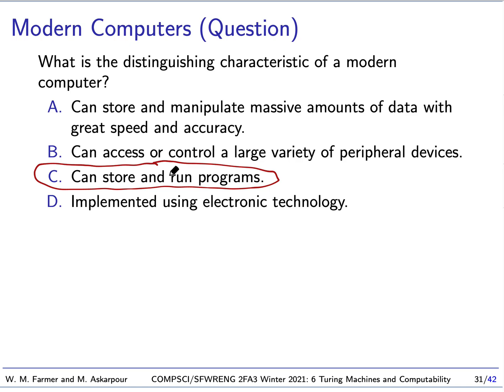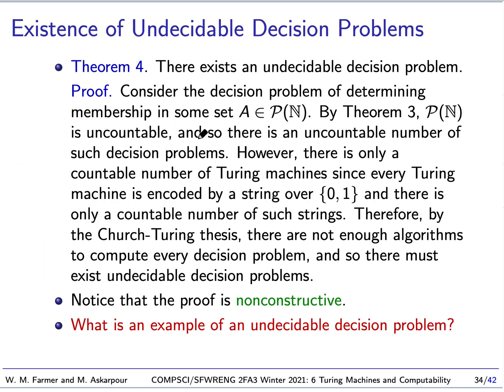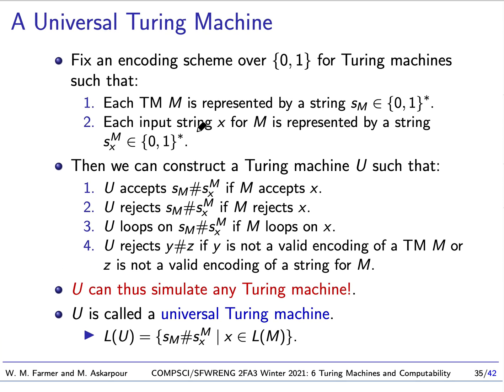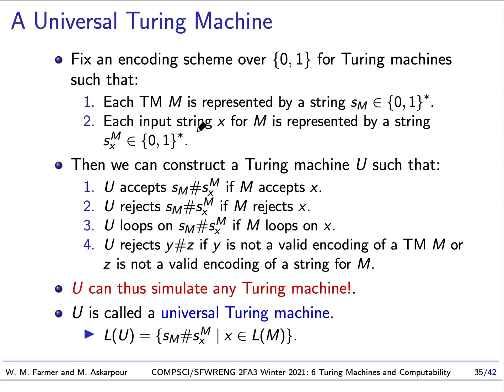And our answer is that modern computers can store and run programs. And if you think of a Turing machine as being as powerful as a computer, in some ways more powerful because it has infinite amount of memory, we should be able to store and run programs. So this brings us to the notion of a universal